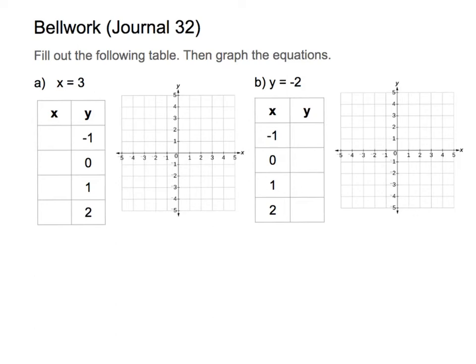Let's start with a bell work here where we're graphing x equals 3 and y equals negative 2. I've given you a table where one side is filled, and you have to figure out what goes in the missing slots. Then we can use these as coordinate points, plot them, and get a picture of what we're graphing.